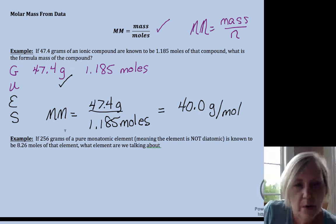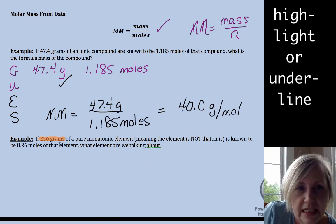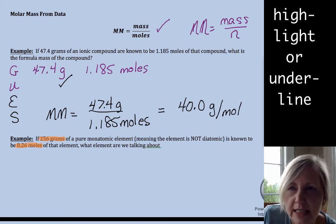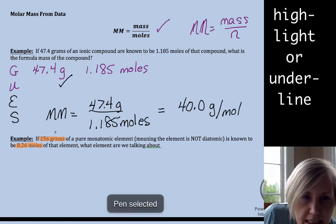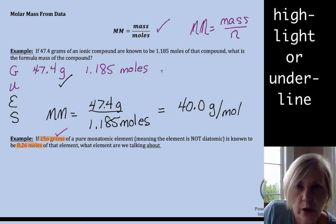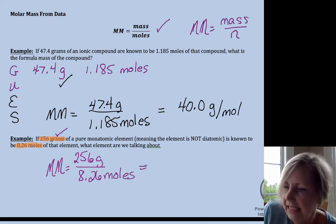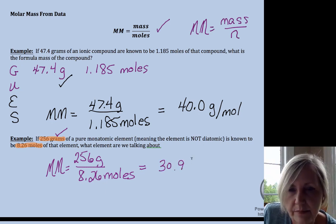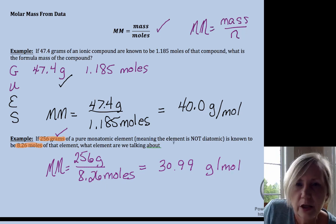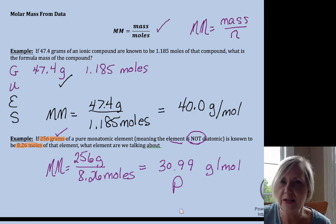In this next example, we have a mass. If you're allowed a highlighter, you can highlight the givens instead of listing them. Check units: we have grams, no conversion needed. Plugging in: 256 grams divided by 8.26 moles gives 30.99 grams per mole. The question tells us this is an element that is not diatomic, so the closest match within experimental error is phosphorus. I hope you got what you needed from that video. Good luck with chemistry.